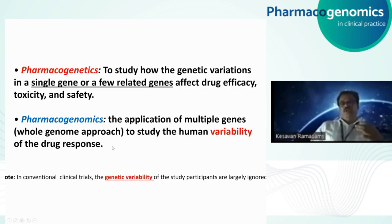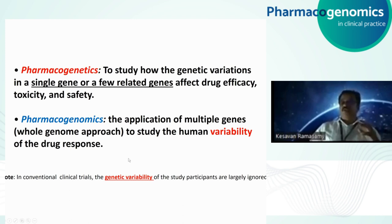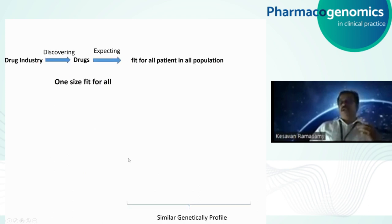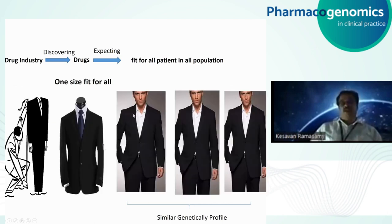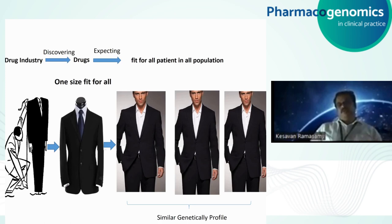One important point to note is that in conventional clinical trials, the genetic variability of study participants is largely ignored because genetic variability causes a lot of changes. The conventional drug discovery approach is called the one-size-fits-all approach. This is like a ready-made suit concept where the designer brings up suits and expects that a customer of a particular size will fit.